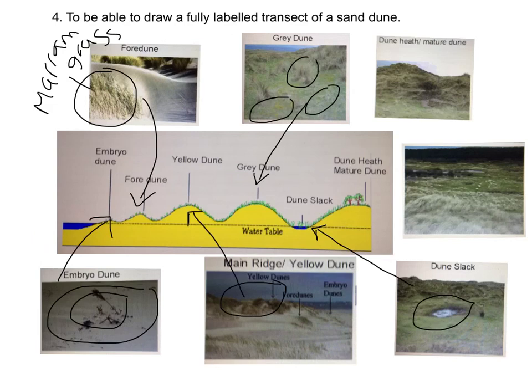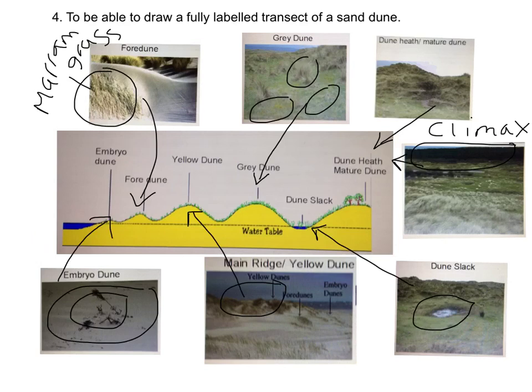The last stage is dune heath: quite low-lying grass and heathland. If it progresses further, we get trees such as those visible in the background — that's called our climax community. Often humans prevent the trees from growing because the area is used for heath or farming and grazing, so the climax community can sometimes be hindered. Make sure you can recognise these pictures for each zone so you know which one belongs to which stage.